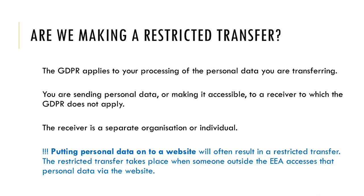The receiver cannot be employed by you or your company, but it can be a company in the same group. Example one: a UK company uses a centralized human resources service in the United States provided by its parent company. The UK company passes information about its employees to the parent company in connection with the HR service — this is a restricted transfer. Example two: a UK company sells holidays in Australia and sends customer personal data to hotels in Australia to secure bookings — this is also a restricted transfer.